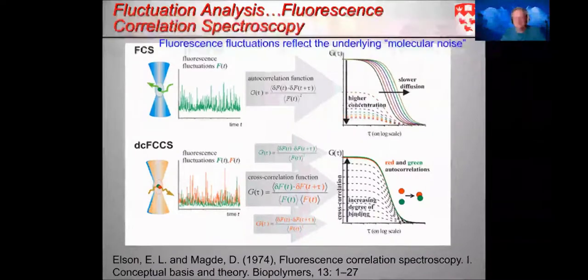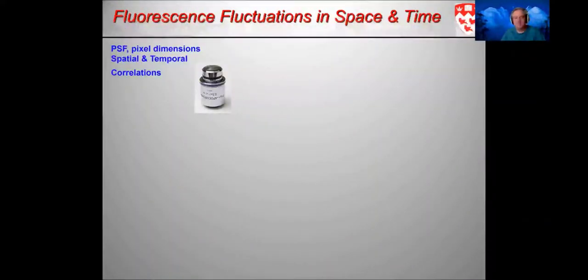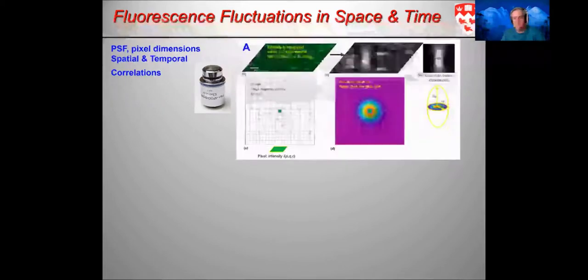The FCS method and the FCCS method form the basis from which the image correlation methods were developed. But we now extend to the imaging platform to extract more information from these types of systems, and specifically we're interested in cells. When one moves to looking at image correlation spectroscopy, it becomes important to understand what type of imaging system are you using, what is the point spread function, pixel dimensions, time step, and specifically how is the light focused.